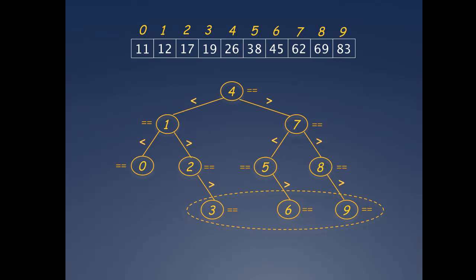The array values corresponding to these indices are 19, 45, and 83, so if you search for any one of these, you will end up making 7 comparisons to find it.